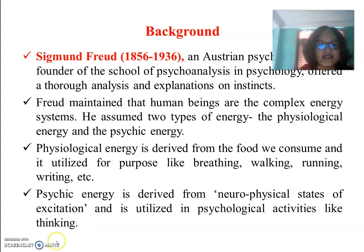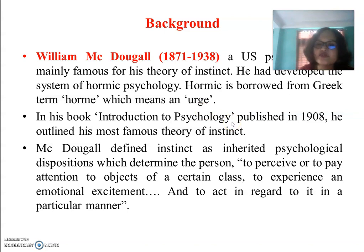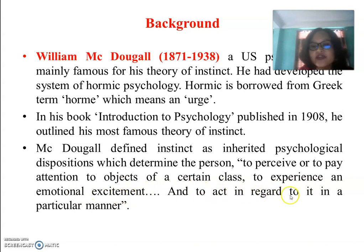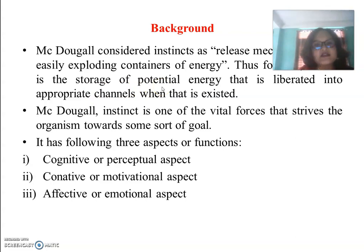William McDougall (1871–1938), a U.S. psychologist, is mainly famous for his theory of instinct. He developed the system of Hormic psychology — 'hormic' borrowed from the Greek term 'horme,' meaning an urge. In his book Introduction to Psychology, published in 1908, he applied his most famous theory of instinct. McDougall defined instinct as an inherited psychological disposition which determines the person to perceive objects of a certain class, experience emotional excitement, and act in a particular manner. He considered instinct as a release mechanism — stored potential energy liberated into appropriate channels when stimulated.